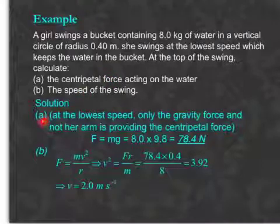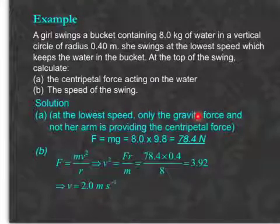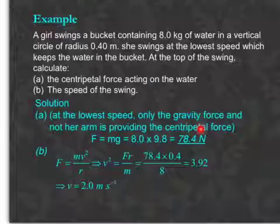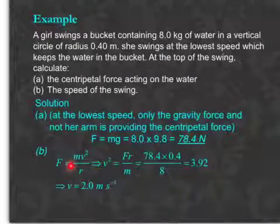So for question A, notice at the lowest speed, only the force of gravity is providing the centripetal force. Her arm is not providing any force at all. So the centripetal force is simply mg, which is that. And put it into this formula, you can work out the speed as well.